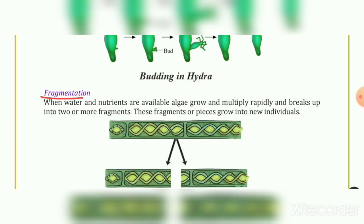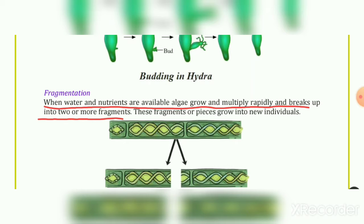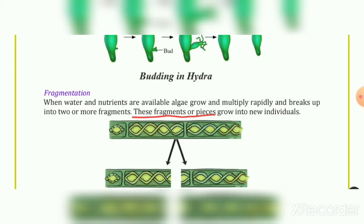The third method is fragmentation. When water and nutrients are available, algae grow and multiply rapidly and break up into two or more fragments. These fragments and pieces grow into new individuals, as shown in the figure on fragmentation.